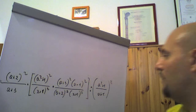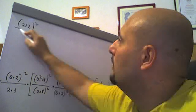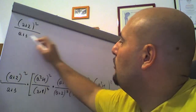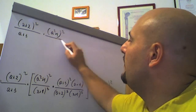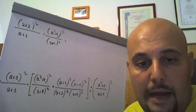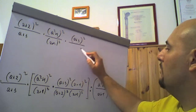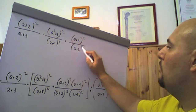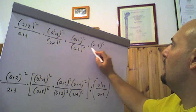Effettuiamo questa nostra semplificazione, se c'è qualcosa da semplificare. Come vedete, qui non c'è niente da semplificare. E quindi non dobbiamo fare altro che svolgere tutto questo prodotto e semplicemente riscrivere quindi (a più 2) al quadrato diviso (a più 3), poi abbiamo (a quadro più 1) al quadrato diviso (a più 1) al quadrato, poi abbiamo per (a più 3) al quadrato, fratto (a più 2) al quadrato, poi abbiamo per (a meno 1) al quadrato diviso (a più 1) al quadrato.